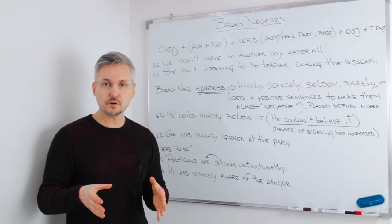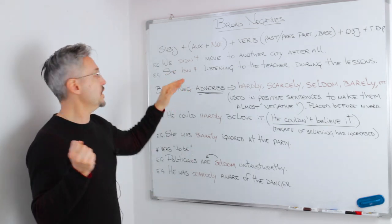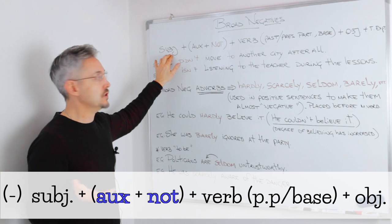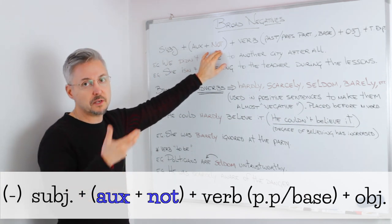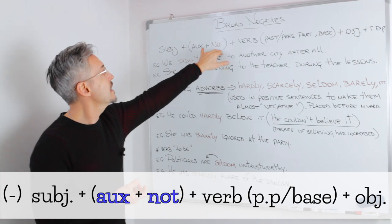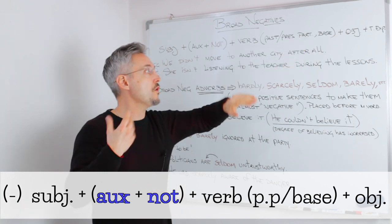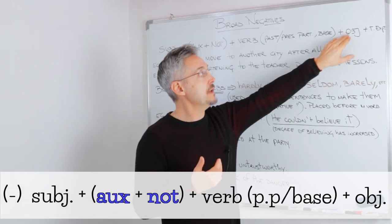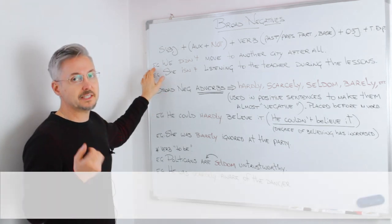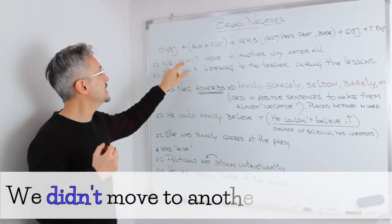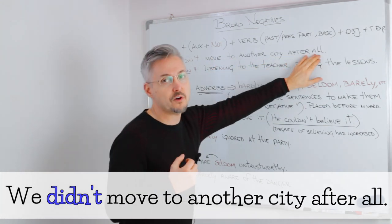So I'm quite sure you all know how to make a negative statement, but I'm going to review it with you. So the subject goes first, then we have the auxiliary and here we have 'not', obviously, because it's a negative statement. Then we have the verb — that could be a present or past participle or the base of the verb. Then we have an object and then the time expression. So the example that I wrote: we didn't — so we did not — move to another city after all.